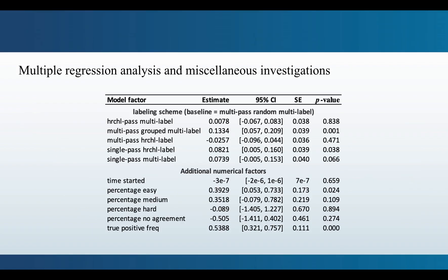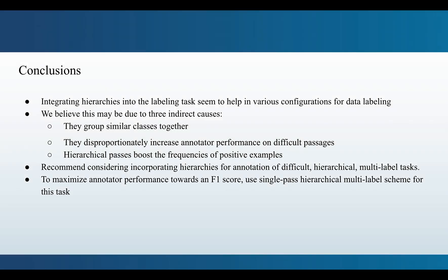We also perform a multiple regression analysis and a few investigations into what factors might be contributing to the differences in annotated performance across these labeling schemes. These investigations are further detailed in the paper and some conclusions for this study is that integrating hierarchies into the labeling task seems to help in various configurations for data labeling. We believe that this comes down to three indirect causes. They group similar classes together. They disproportionately increase annotators performance on difficult passages versus easy passages. And hierarchical passes boost the frequency of positive examples, thereby rebalancing the classes during labeling.